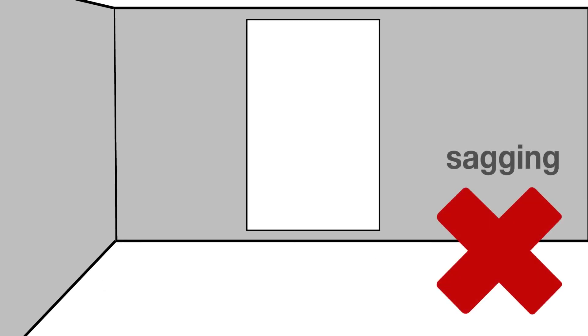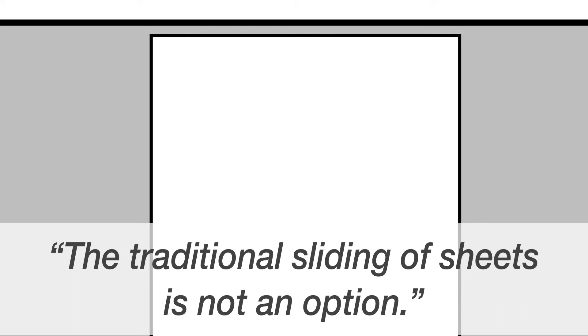Spraylock FRP has immediate shear strength, which completely eliminates sagging, shifting, and bracing during installation. However, this also means that traditional sliding of sheets into place is not an option.